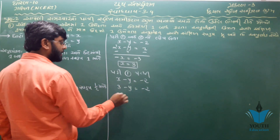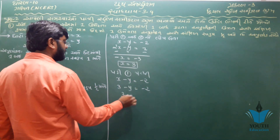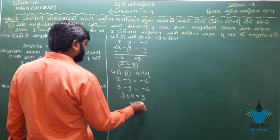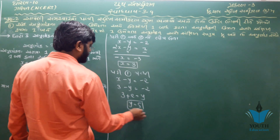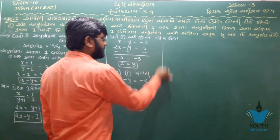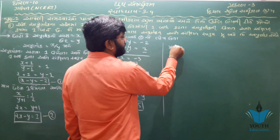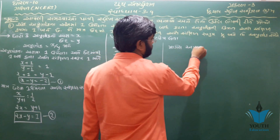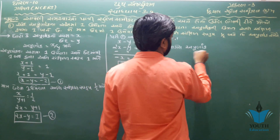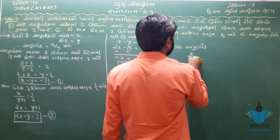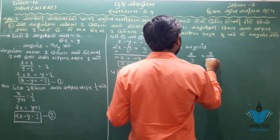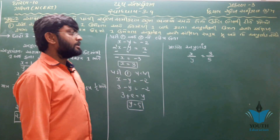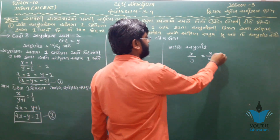2 ઉમેરતા y = 5 મળ્યું. આપણે જે પૂર્ણાંક શોધવાનો હતો — x ના છેદ y — x = 3 અને y = 5, તો 3 ના છેદ માં 5 એટલે 3/5. [The required fraction is 3/5.]